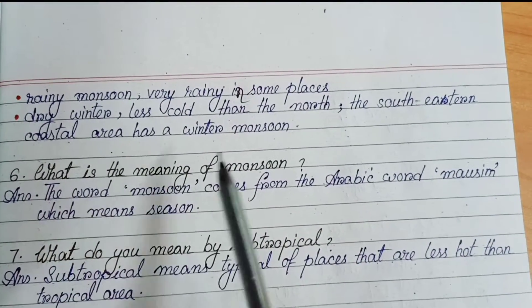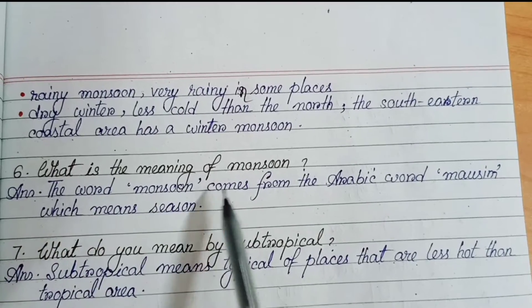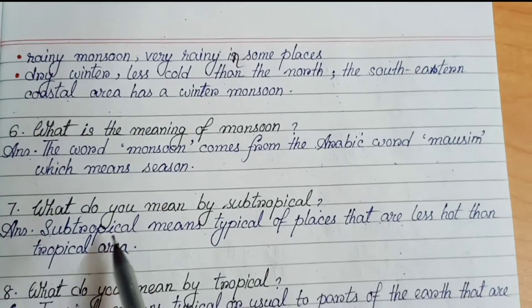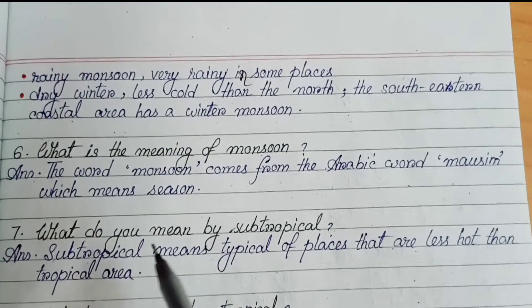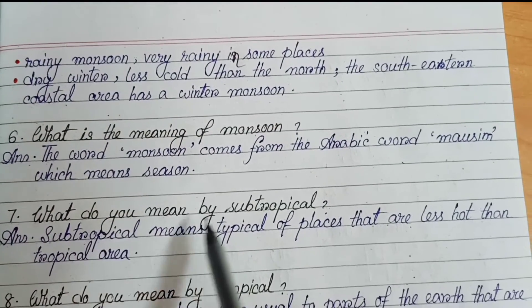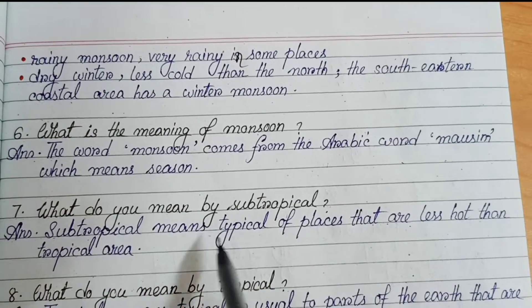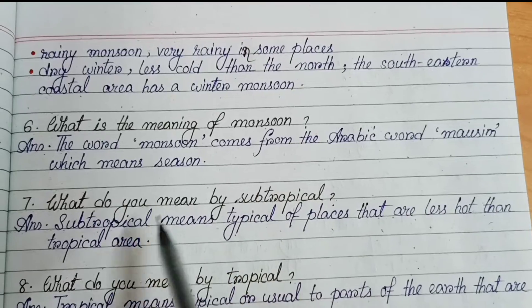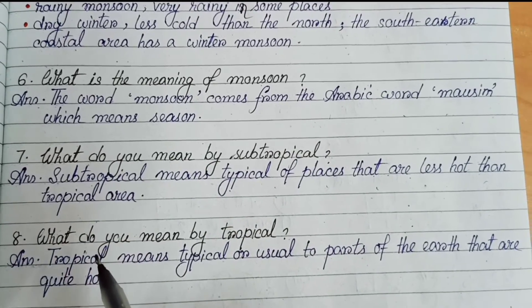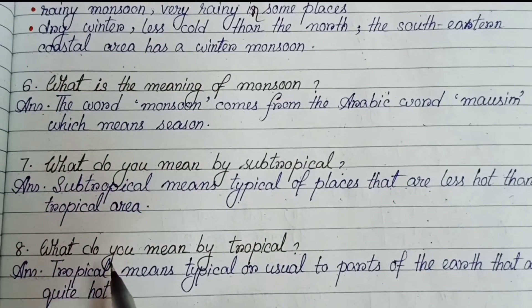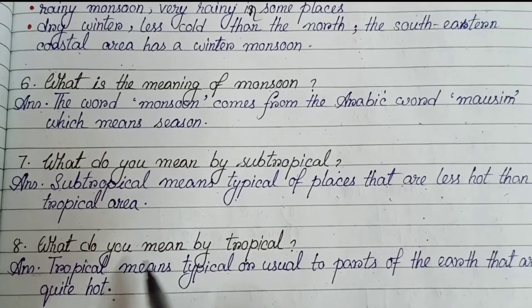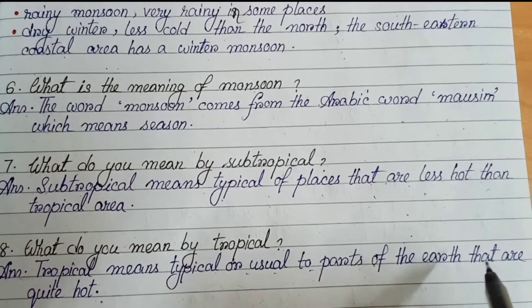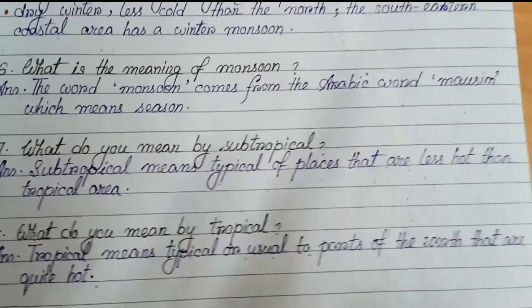Number 6: what is the meaning of monsoon? The word monsoon comes from the Arabic word 'mossim' which means season. Number 7: what do you mean by subtropical? Subtropical means typical of places that are less hot than tropical areas. Number 8: what do you mean by tropical? Tropical means typical or usual to parts of the earth that are quite hot.